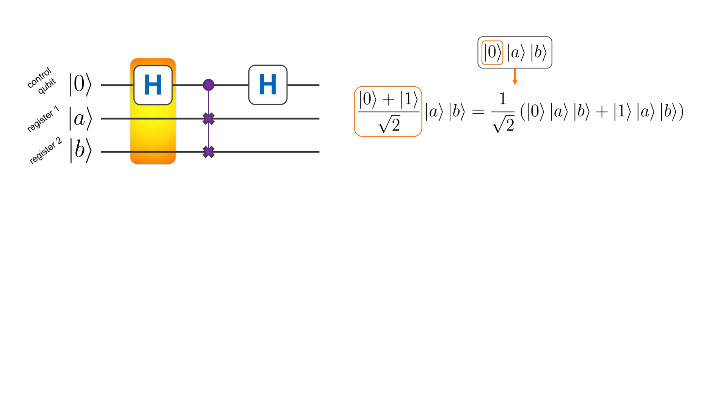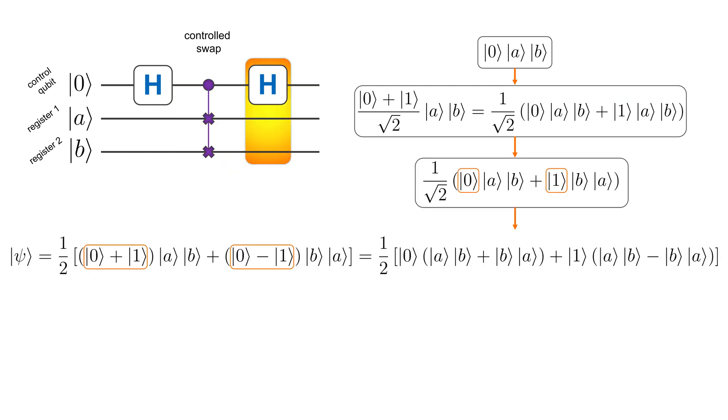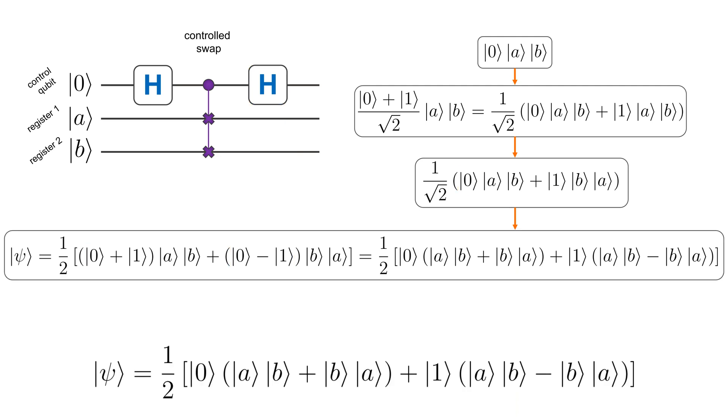A Hadamard transformation sets the ancillary into a superposition. Controlled swap gate swaps the two registers under the condition that the ancillary qubit is in state 1. A second Hadamard gate on the control qubit results in the following state. At this moment, it is obvious that if ket A is equal to ket B, the control qubit will be in state 0 with 100% probability, because the second term in psi vanishes.